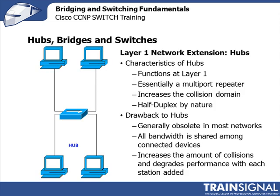Layer one network extension is essentially the function of hubs. Remember, a repeater is a two-port device; a hub is a multi-port device. But essentially, all it does is regenerate electrical signals. So hubs function at layer one — essentially a multi-port repeater.